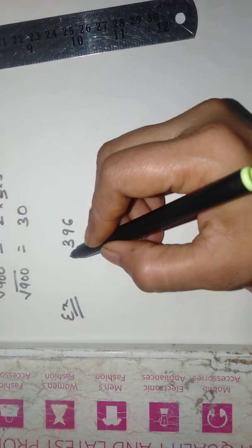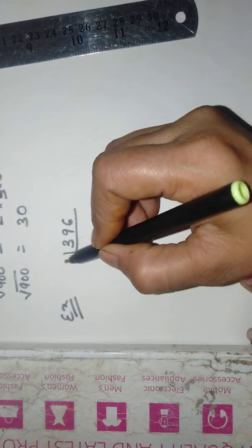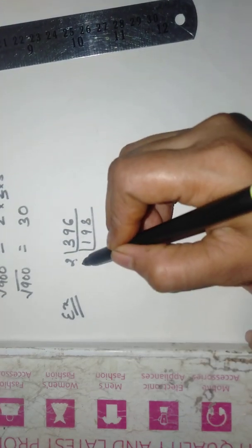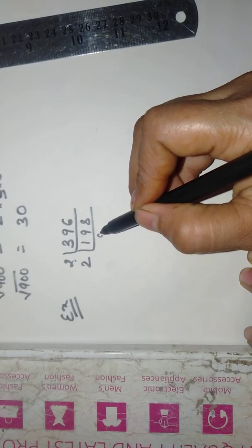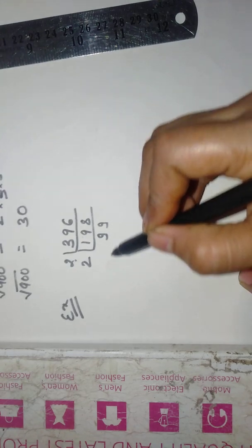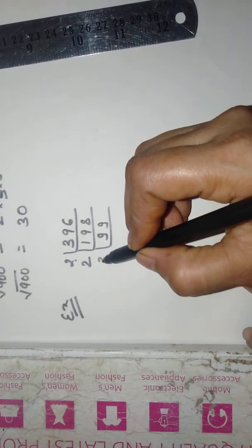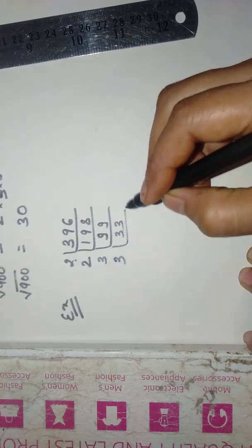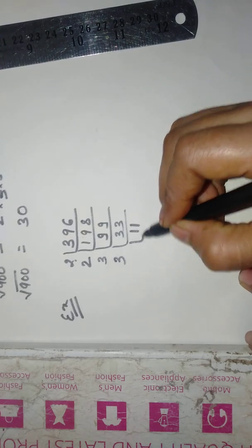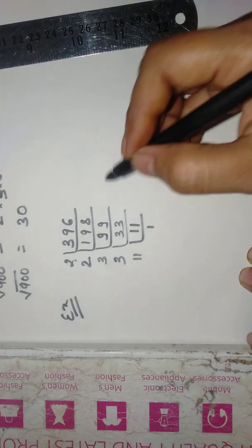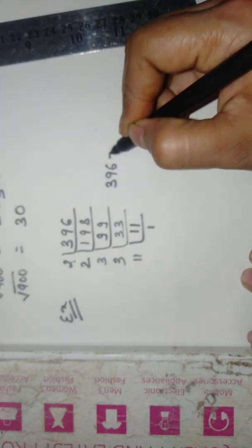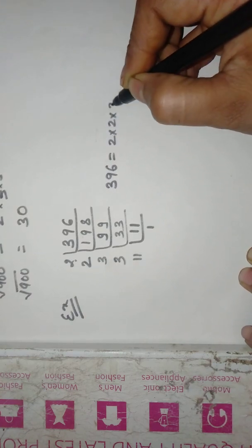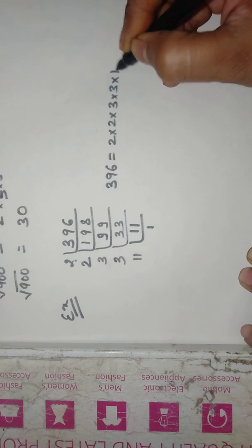Dividing it by 2 to find out the prime factors, we will get 198. Again dividing by 2, we will be getting 2 nines are 18 and 2 nines are 18. Now 99 is divisible by 3 as 33 times. Again dividing by 3, we will be getting 11 then 11 one time. Now 396 is written in terms of its product of factors as 2 into 2 into 3 into 3 into 11.